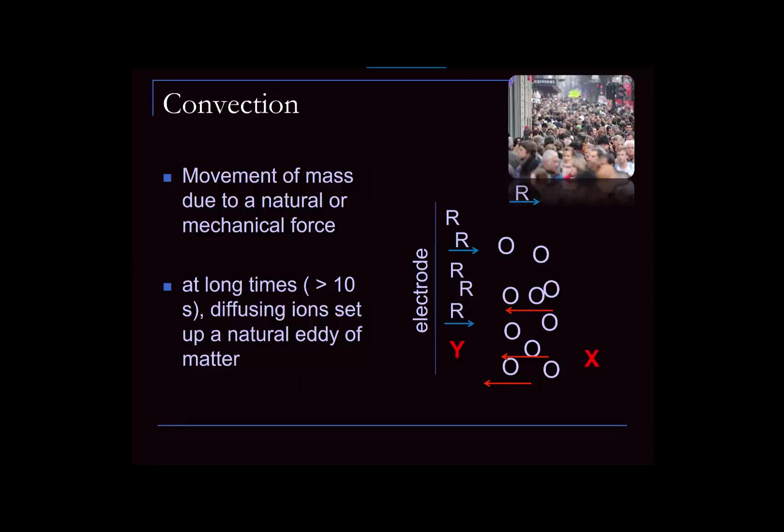Similarly, some species Y at the electrode surface will be carried back out into solution as R diffuses away after electron transfer. At long times — and 'long' in electrochemistry is about 10 seconds — you will have the onset of what's called natural convection. Convection can also be mechanical, when you purposely add a stir bar to set up an unnatural flow of material in a net direction. So we have three modes of mass transport: diffusion, migration, and convection.